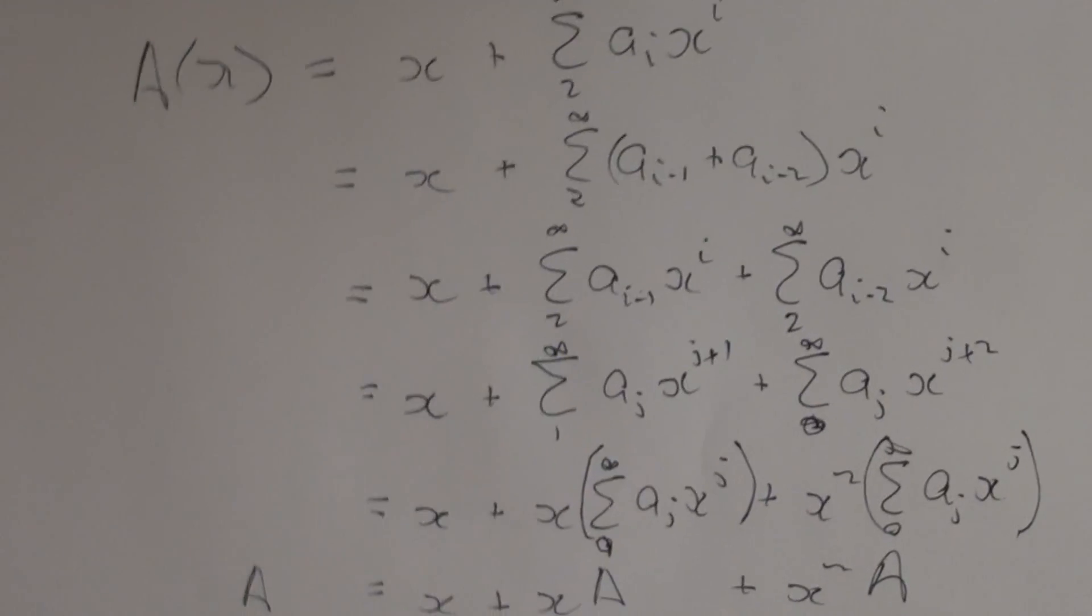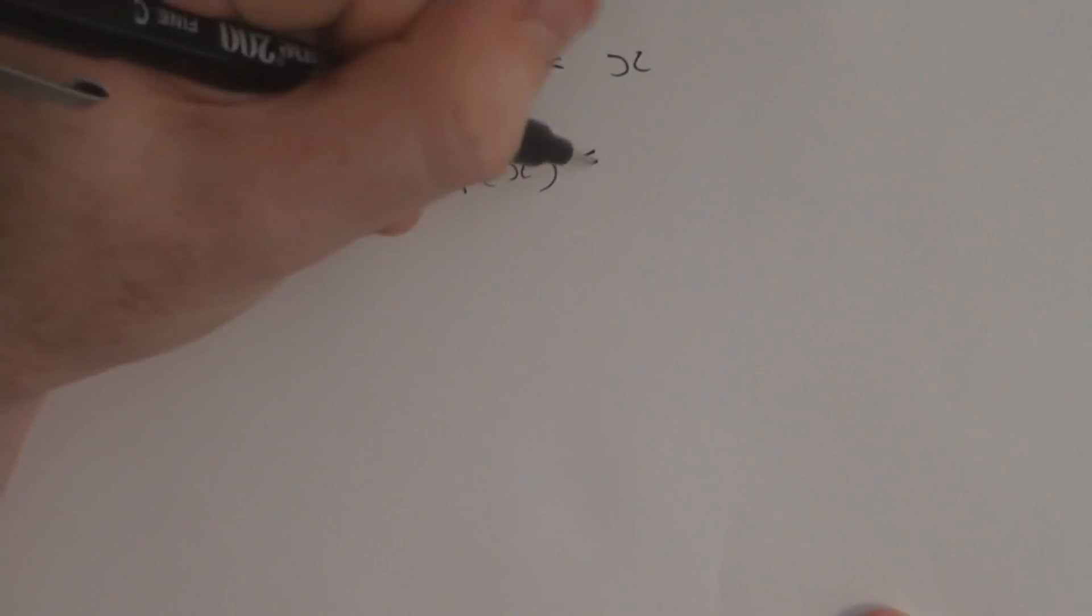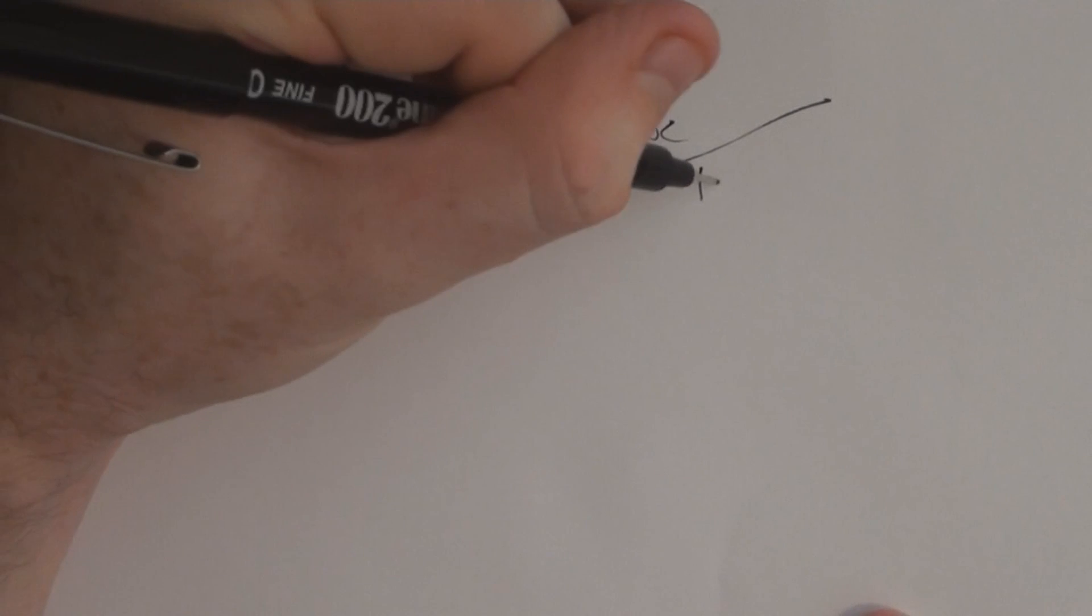And so this says that A equals x plus xA plus x squared A. And now, now we can solve for A. And what we get is, when we bring it all over the side, we get A, A times 1 minus x, oops, minus x squared equals x. And so A of x is precisely equal to x over 1 take x, take x squared.